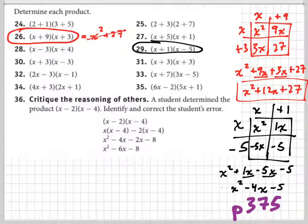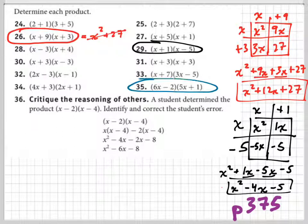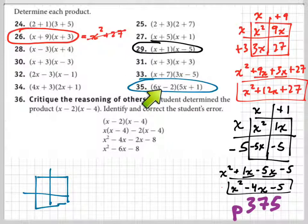We got to do one more because it looks like some of you guys are still not getting it. We're going to do this one right here, number 35. Again, I'm going to use the box. I'm going to switch it up - normally I would put this one on top, but I'm going to put them on the side. It doesn't matter. 6x minus 2, and then I have 5x plus 1.